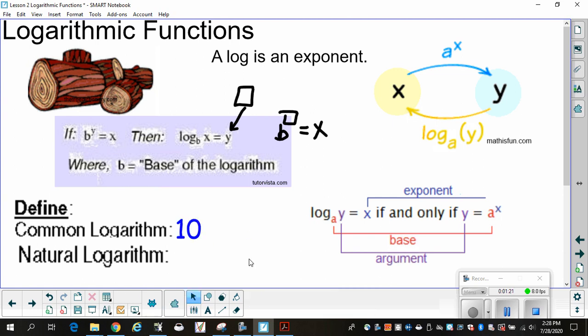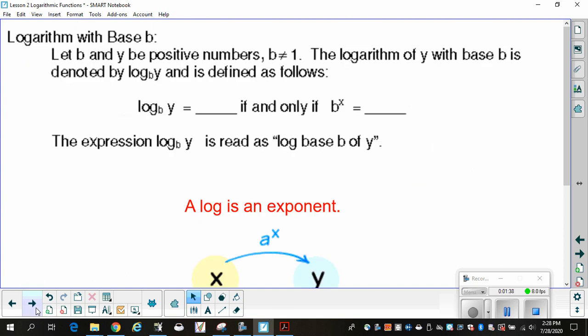The common logarithm is base 10. Base 10 is called the common log because that's what we use to count. The natural logarithm is base e. We're going to talk about e a little bit more. You learned a little bit about e in lesson one. But it is the base of the natural log. Now, logarithm with base b, we're going to let the base and y be positive numbers so that b does not equal one. Because remember, 1 to the 5th power, 1 to the 7th power, 1 to the 5,000th power is still one. So, b is not one. The logarithm of y with base b is denoted by log base b of y. b is a subscript. Please, when you're writing it, make it a little tiny one. Make it a subscript.